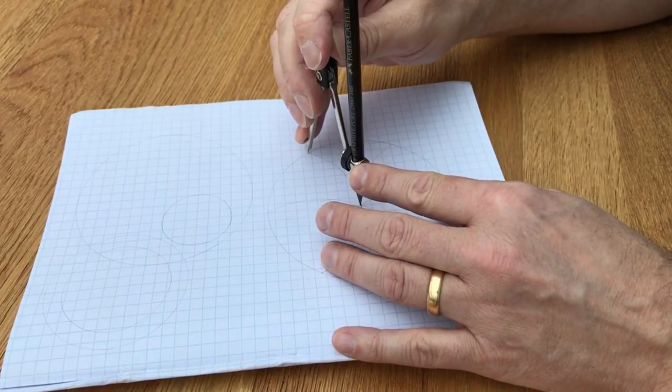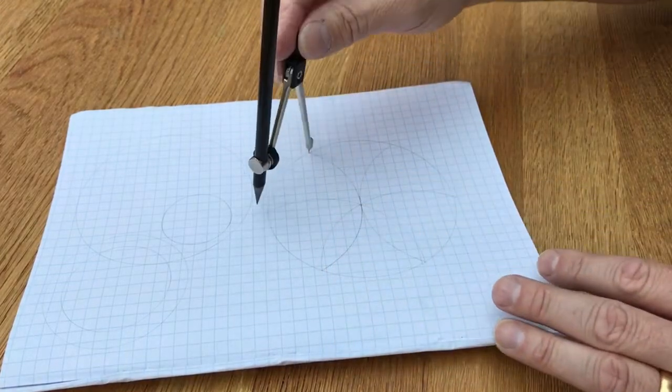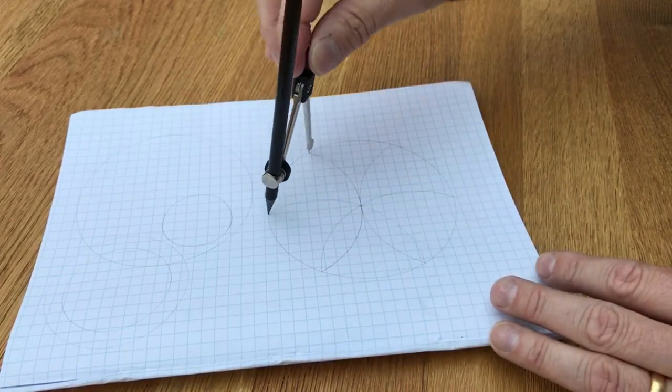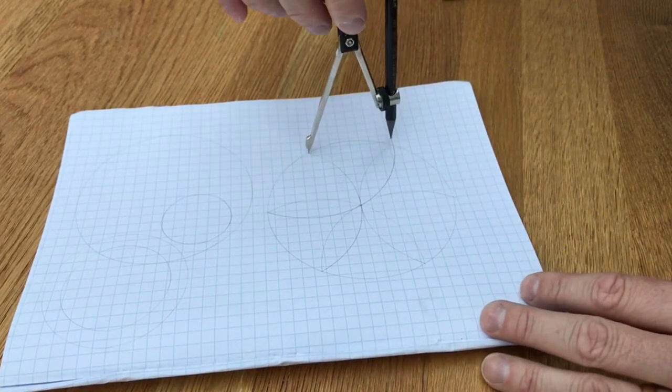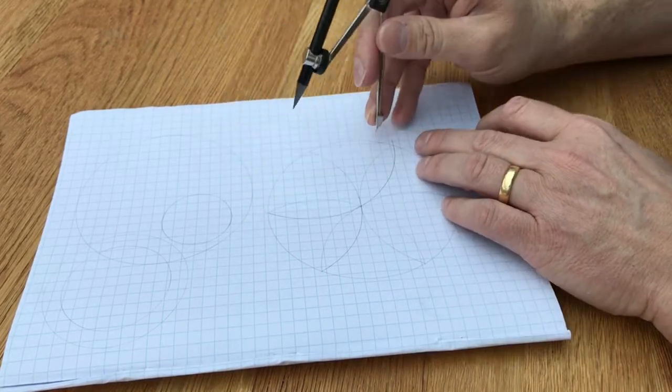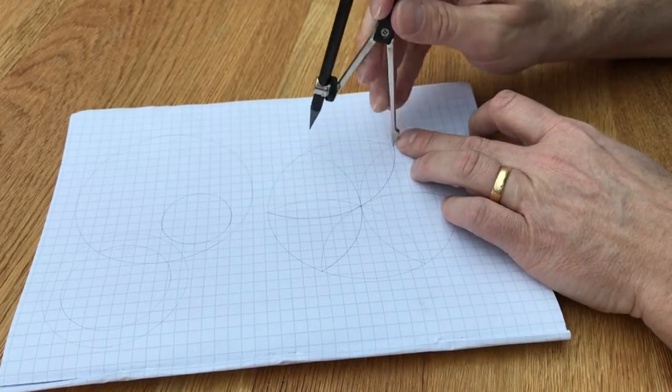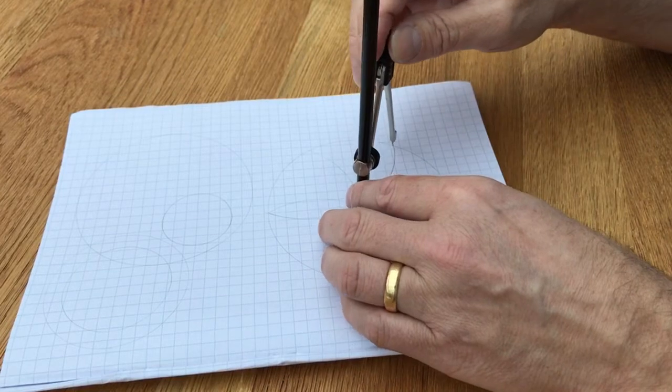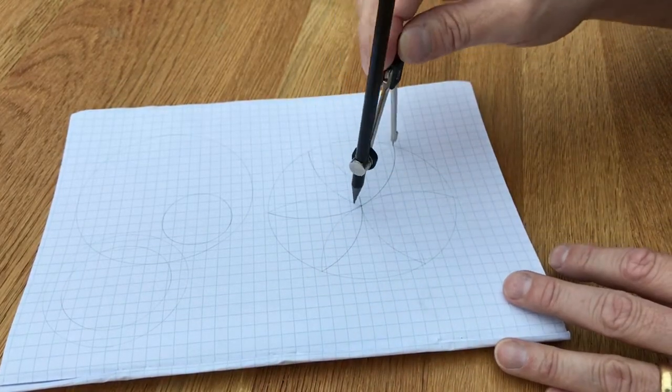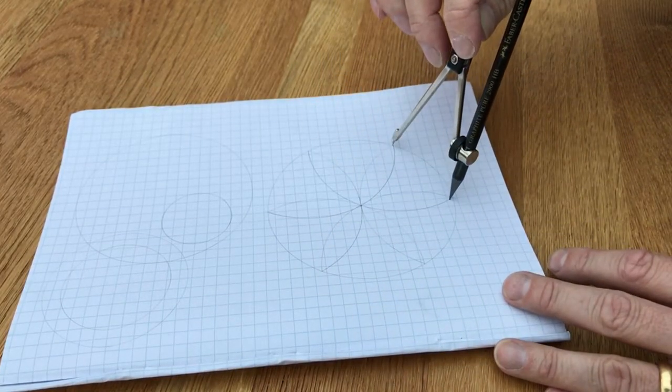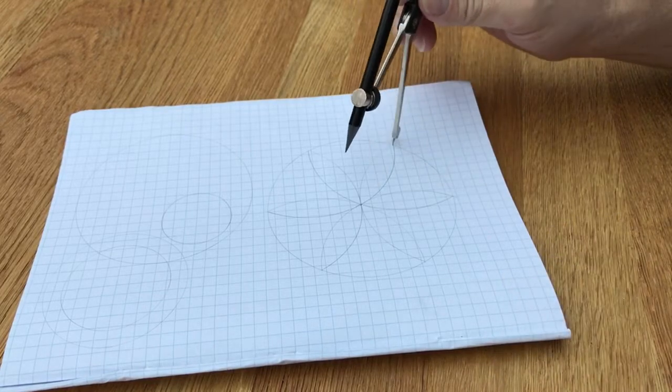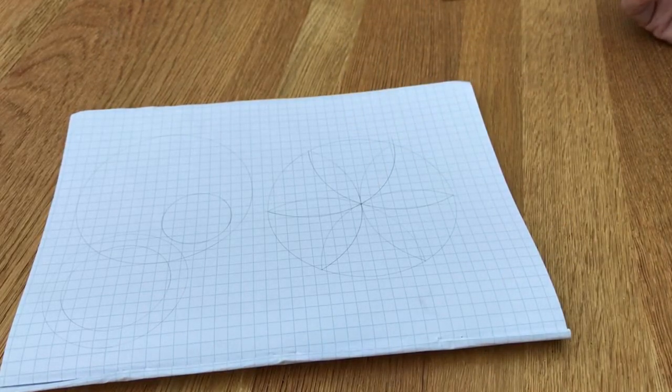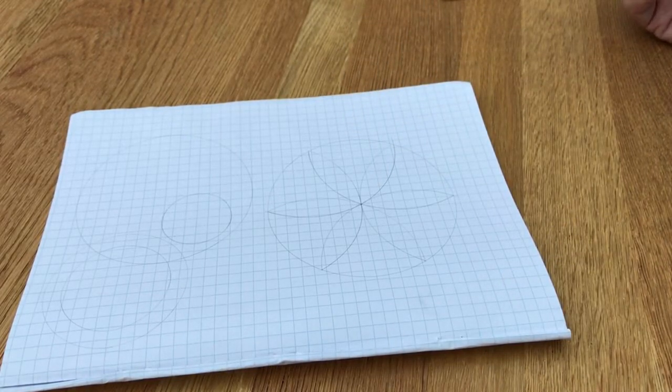There we go. Move along to the next point here. Make sure it's going exactly to the middle. That does seem to have moved a tiny bit, so I'm just going to adjust. Draw another arc. Move around to the next one.